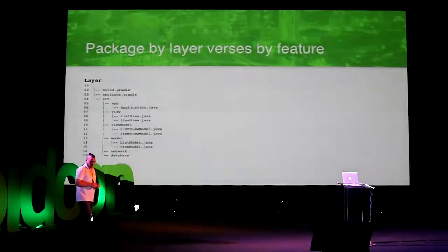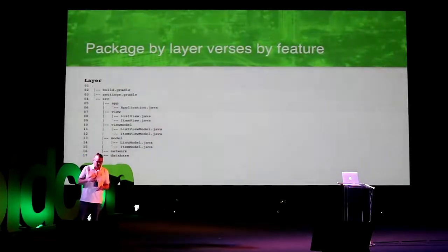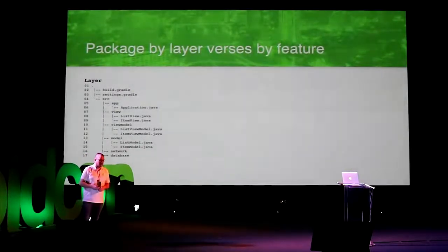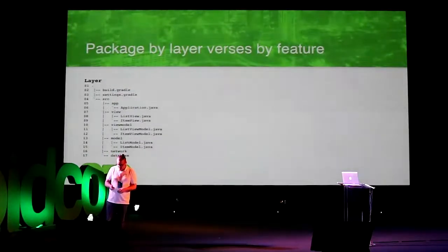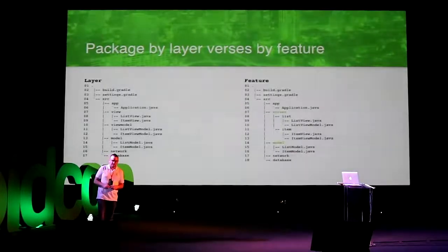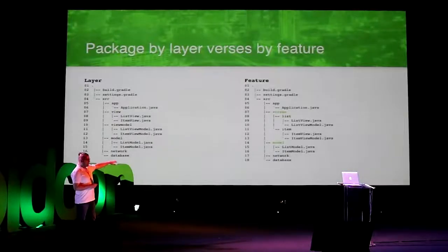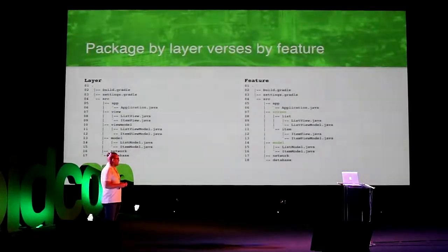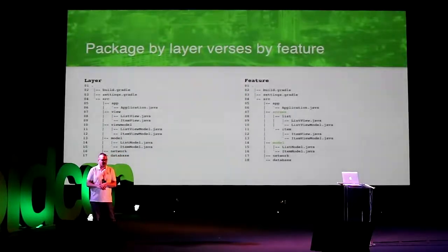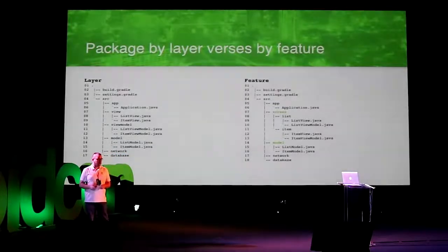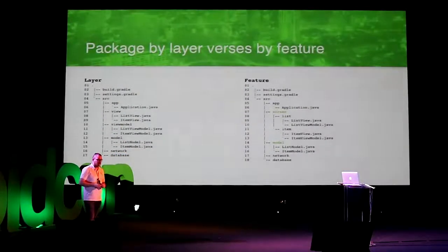Here is an example of what happens if you take the package-by-layer approach into the app: you will get a package called 'view' with all views there, a 'view model' package with all view models, an 'adapter' package with all adapters, and so on. I believe it is a better approach to switch and group by features instead of layers. We still have the model as its own package at the highest level, but as soon as we go into the UI, we should switch and focus on the feature.